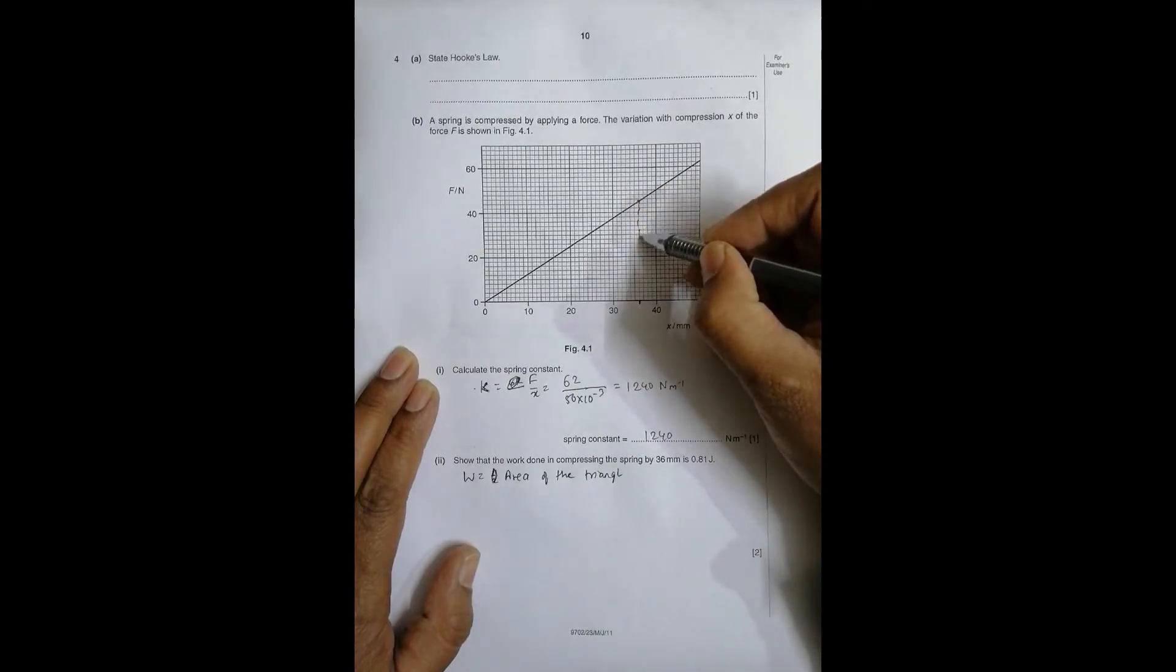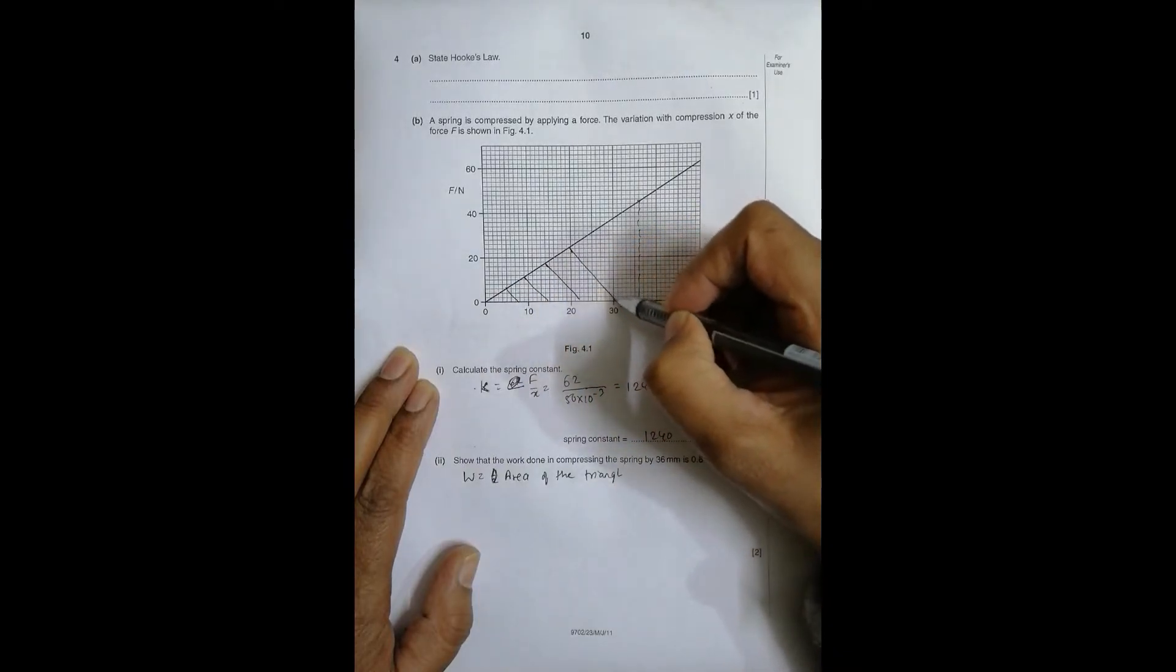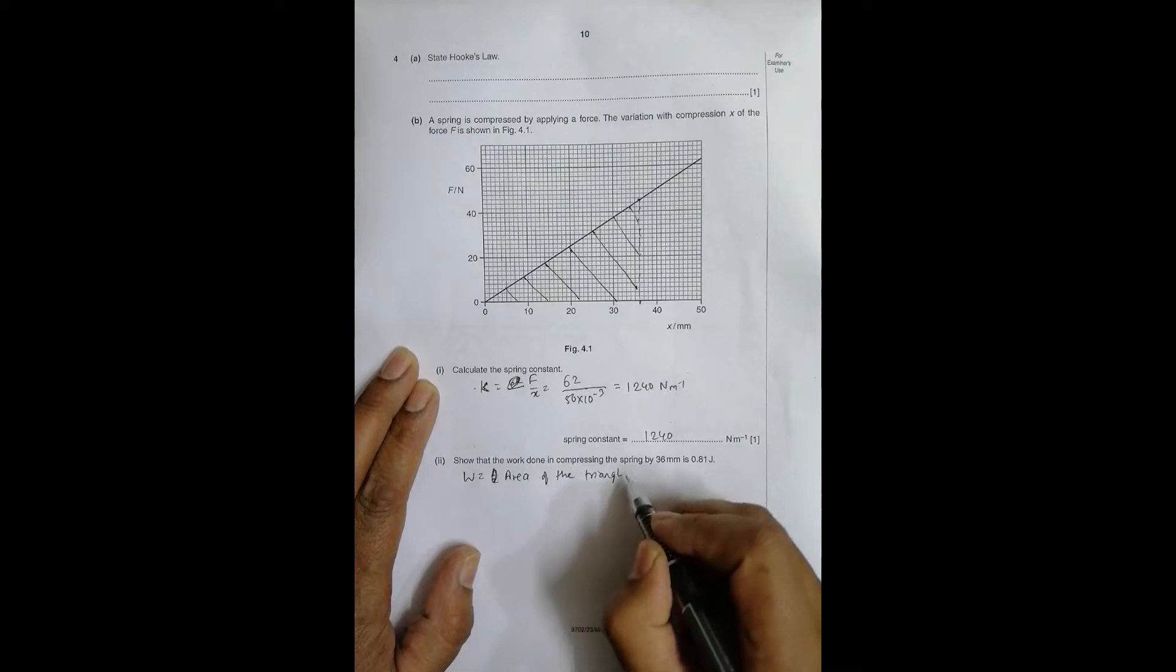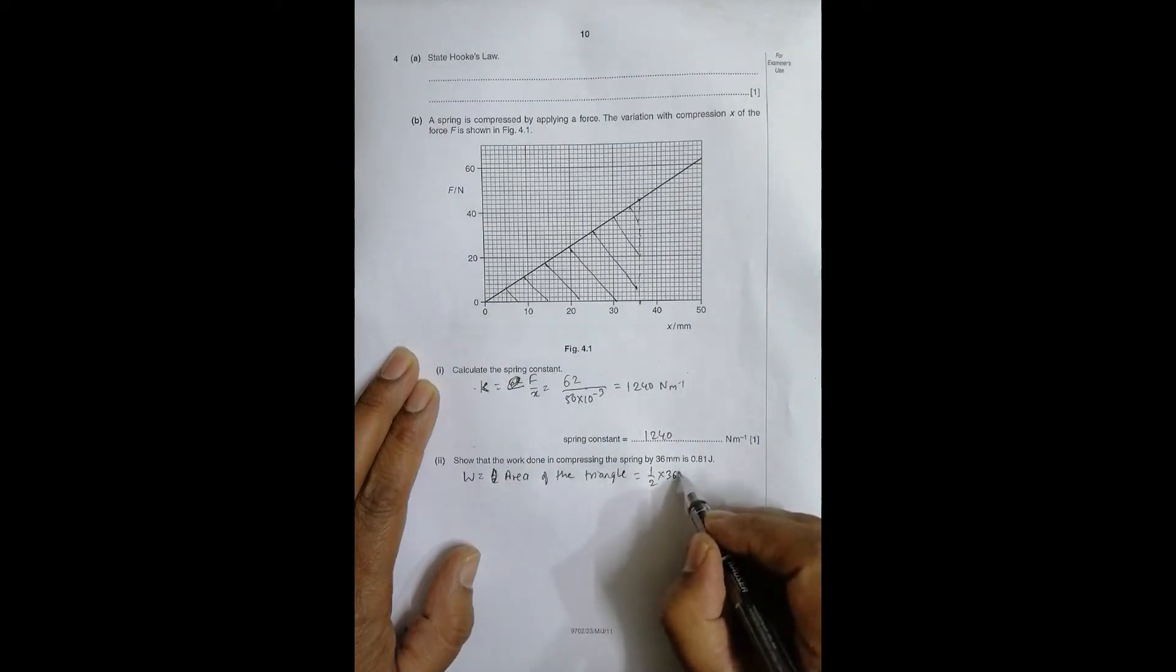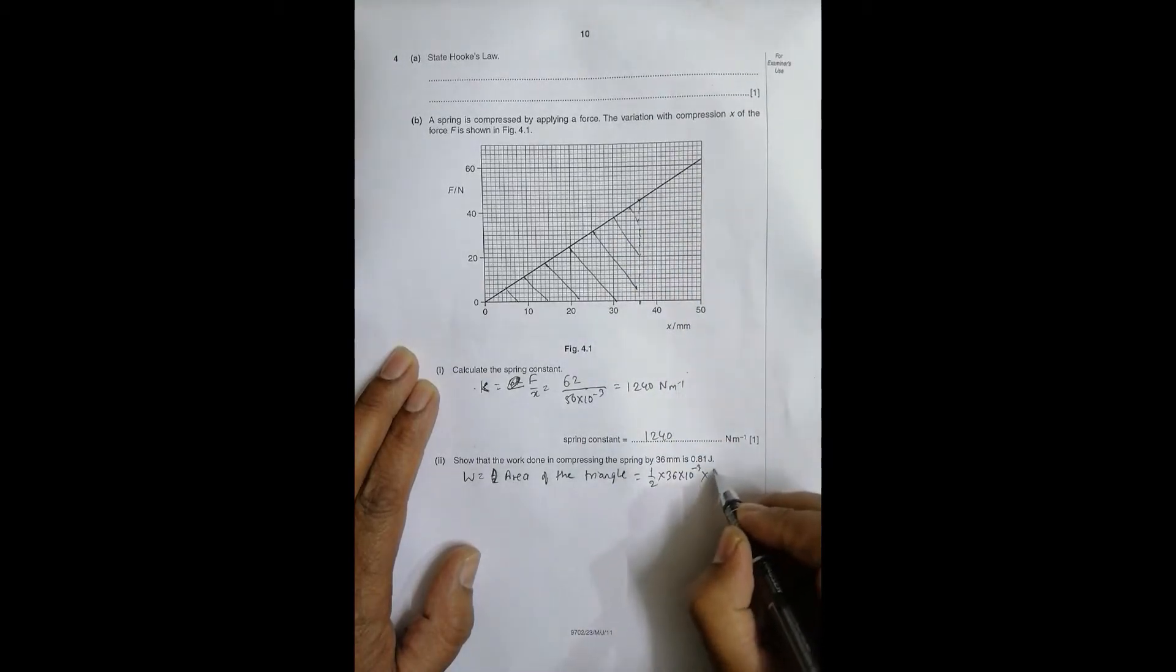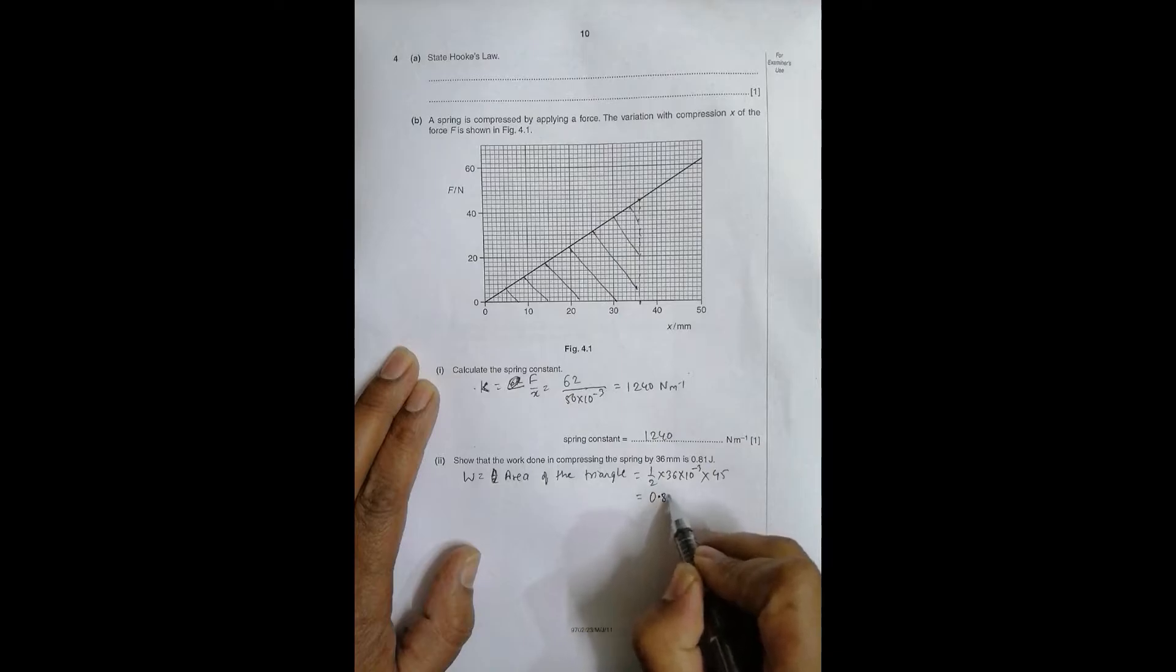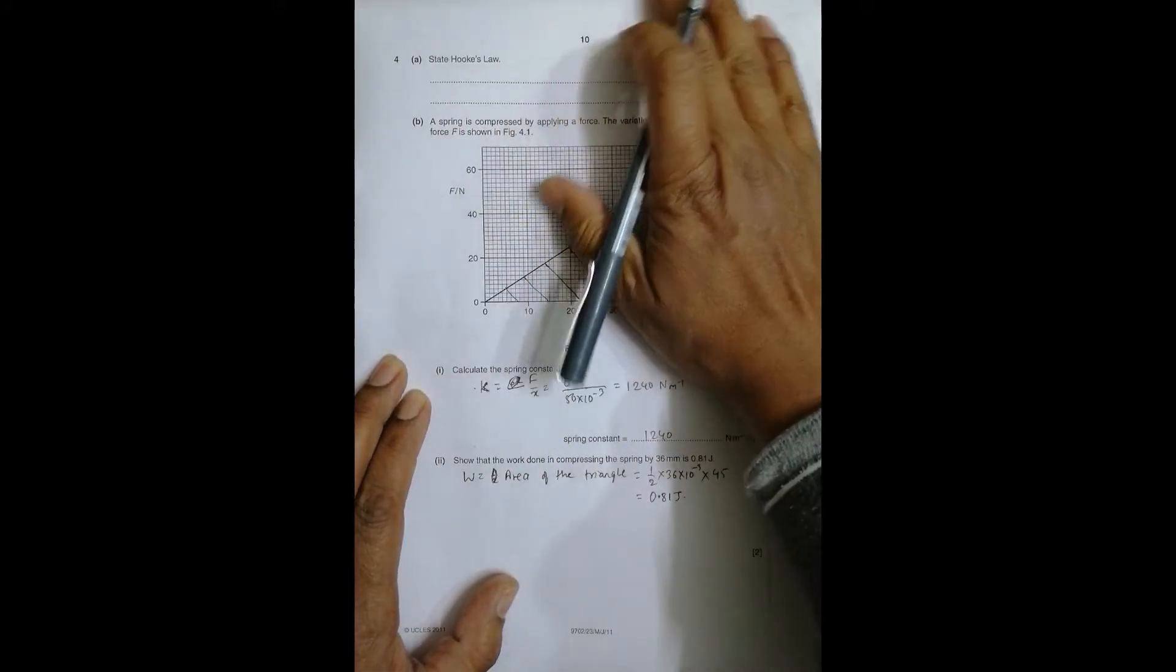This is the area of the triangle. I'm fully taking the hint from the graph to find this thing. That's equal to one by two into base here. Base is 36, so 36 millimeter, in meters it is 36 times 10^-3 into the height which is equal to 45 Newton. So 0.5 into 36 times 10^-3 into 45 equals exactly 0.81 joules. There's no need to round, the answer is exact 0.81 joules.